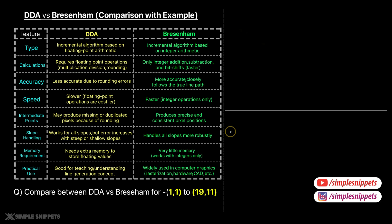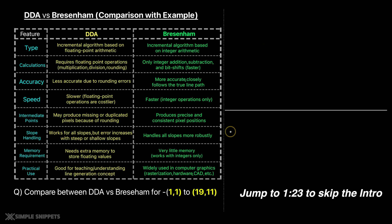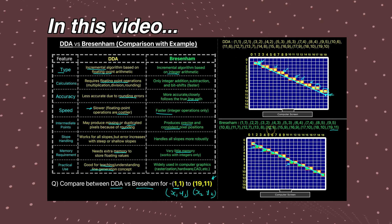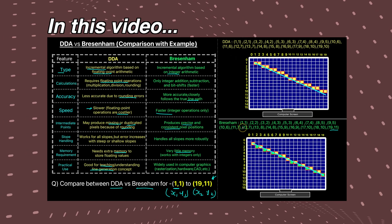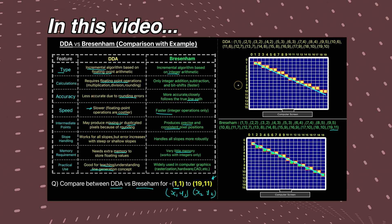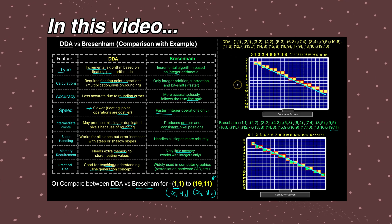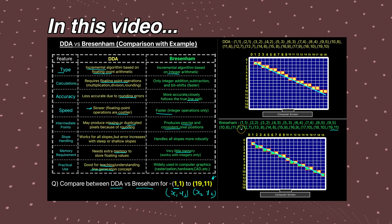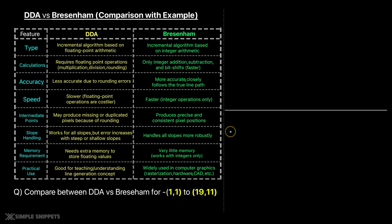Yo, what's going on guys, Tanma here for Simple Snippets and welcome back to another video tutorial on computer graphics. In this video we are going to take a detailed comparison between the DDA line drawing algorithm and the Bresenham line drawing algorithm, and we are going to visually see how Bresenham is better compared to DDA when it comes to speed and accuracy. We will take the same example and plot the line for the same set of coordinates using both algorithms.